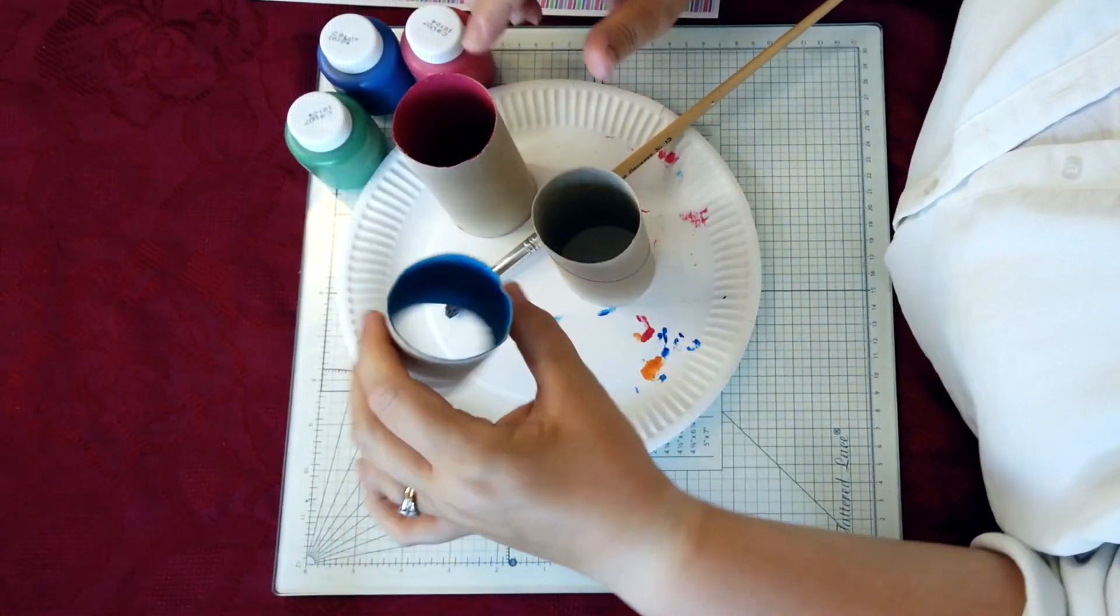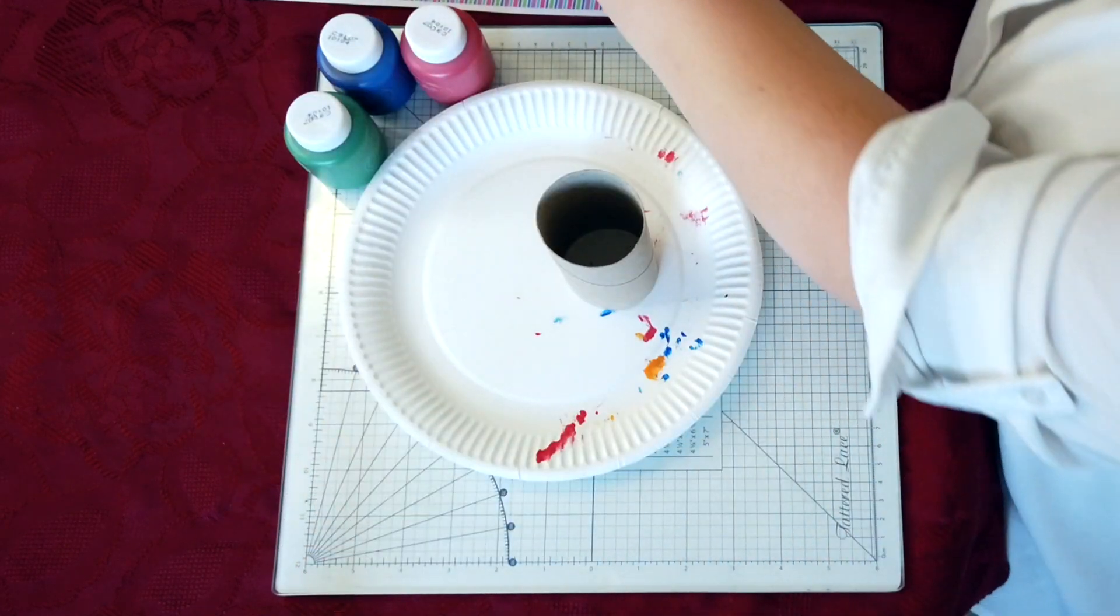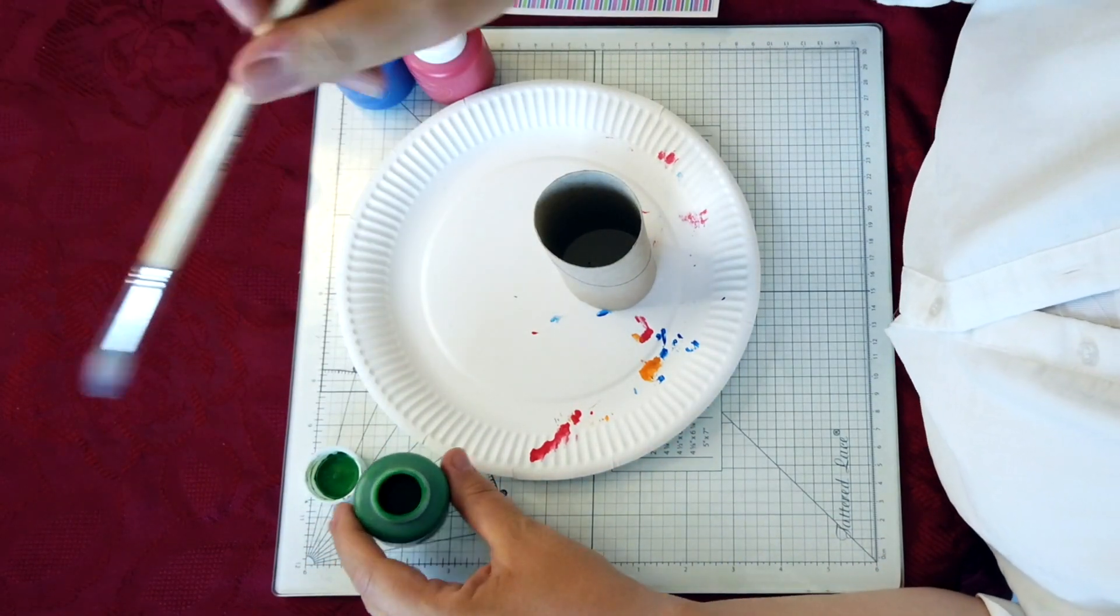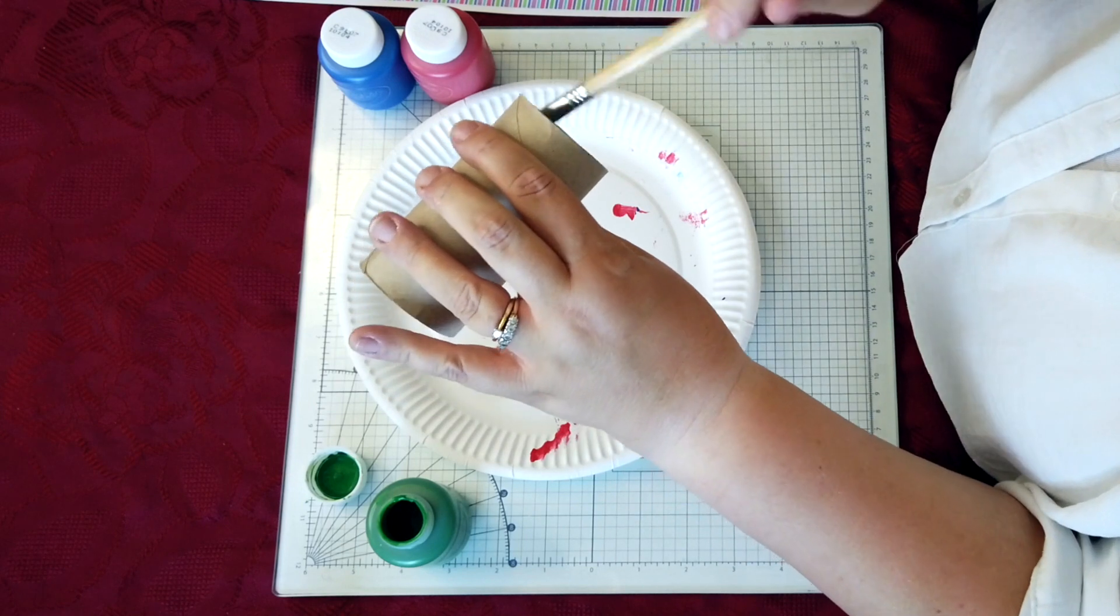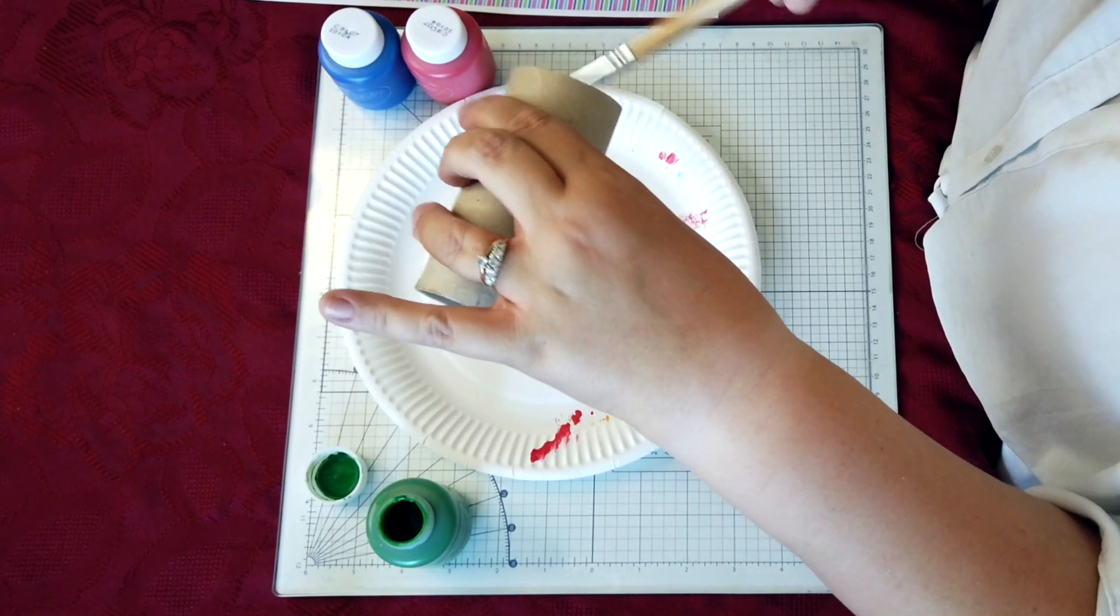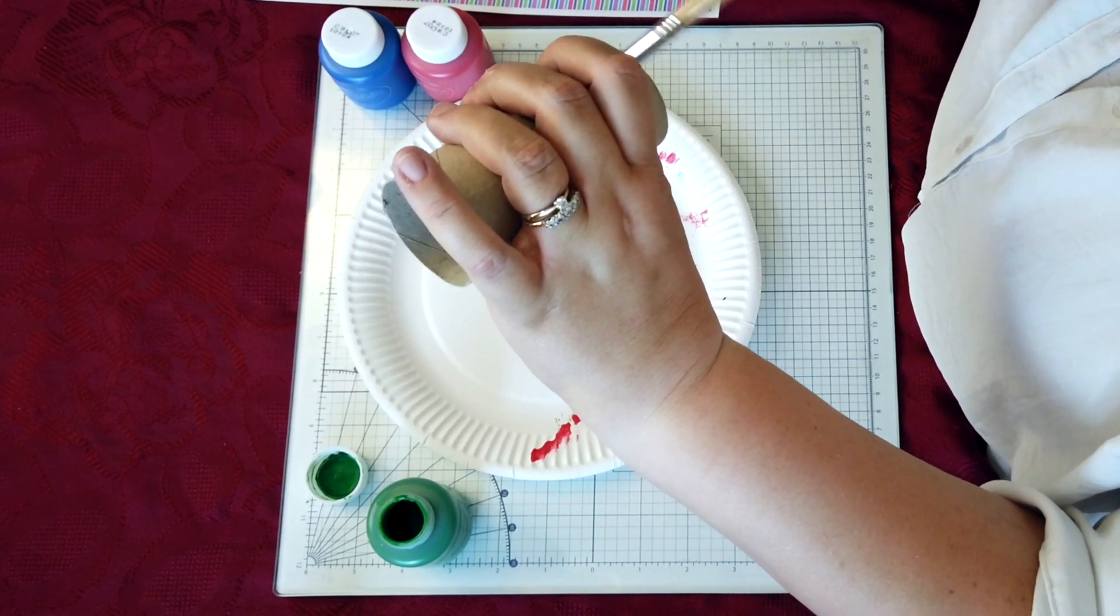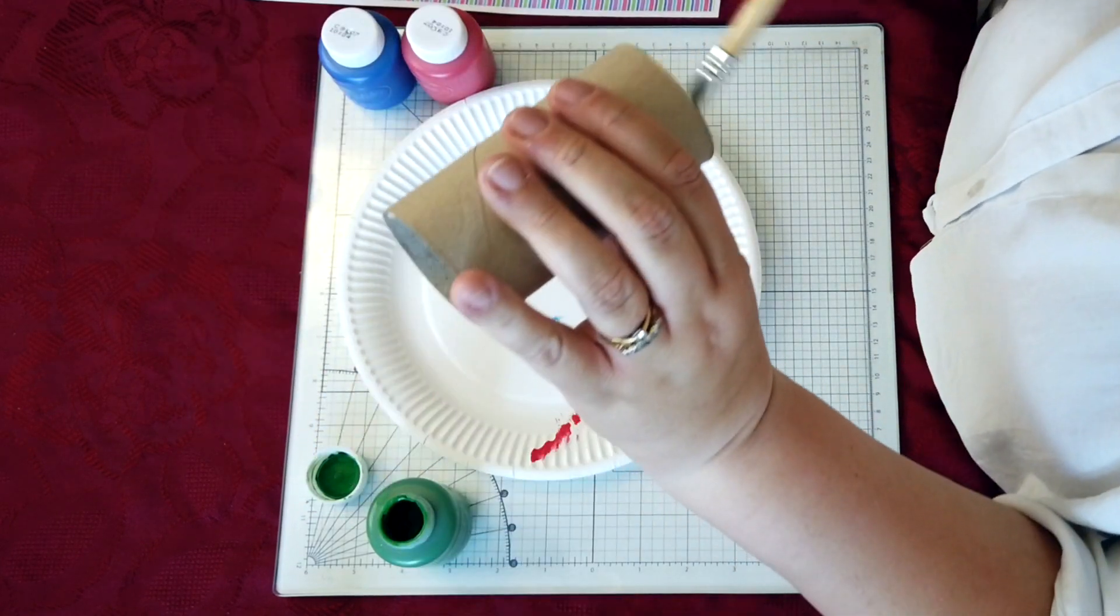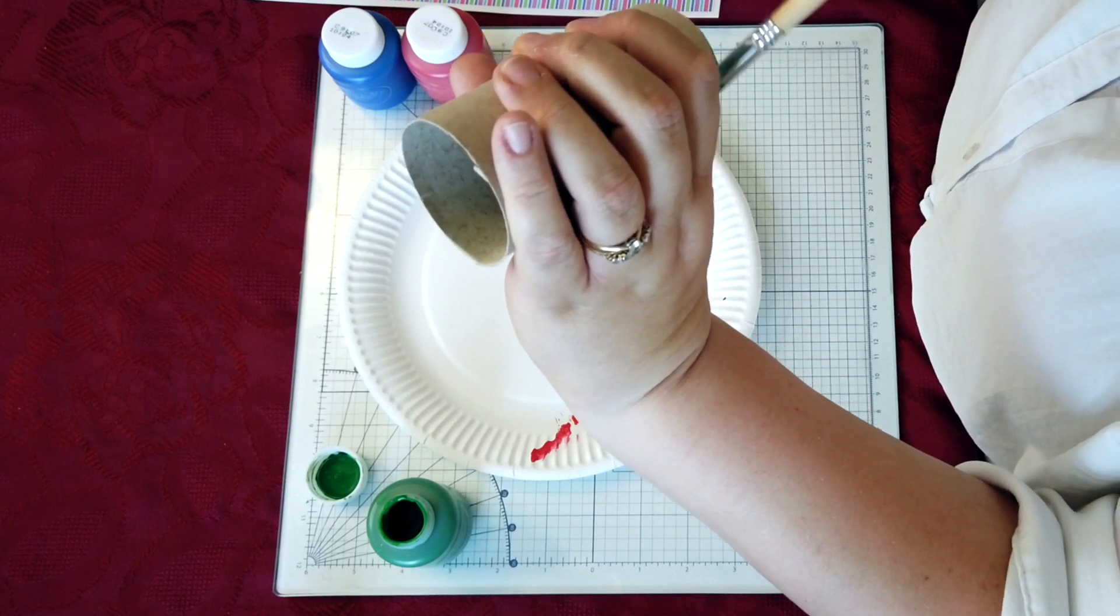First thing you're going to need is a cardboard tube. I need to paint the inside of the tube. I've done it already on two of these, but I'm going to show you how to do it on this one. Only get a little bit of paint on your brush because you want the tube to dry as quick as possible so you can get making your glasses. The paint does soak into the tube, so it should dry pretty quickly. You'll see why you need to paint inside as we get going.